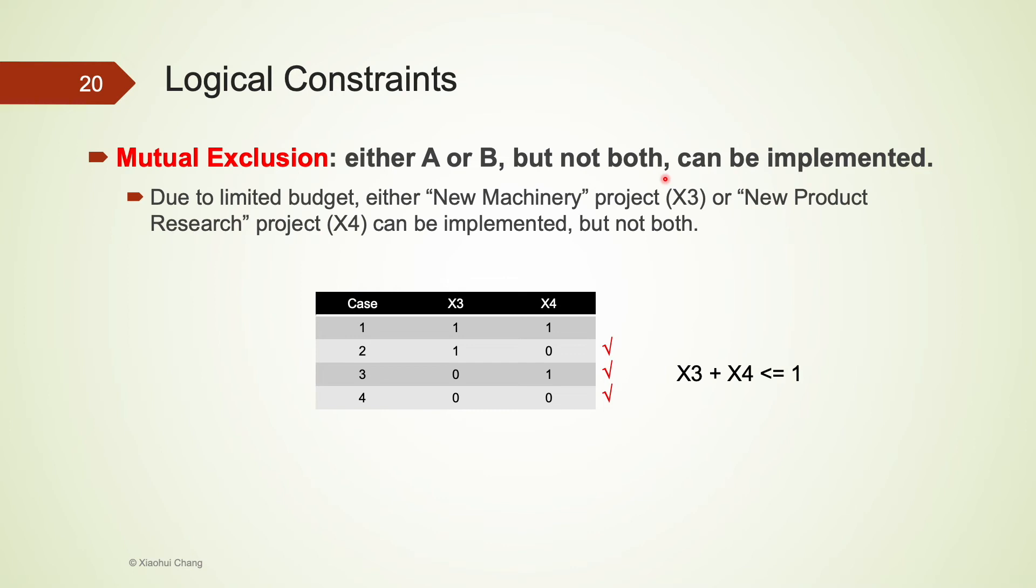When we try to decide between new machinery versus new product research, we have a total of four cases here. One, two, three, four. I've listed all four cases here. The first case is we have both new machinery and new product research projects. So I put 1 for x3 and 1 for x4. The second case is we only have new machinery projects, 1 for x3 and 0 for x4. By going through every single one of them, we can see that here cases 2, 3, and 4 are feasible choices under the mutual exclusive constraint.